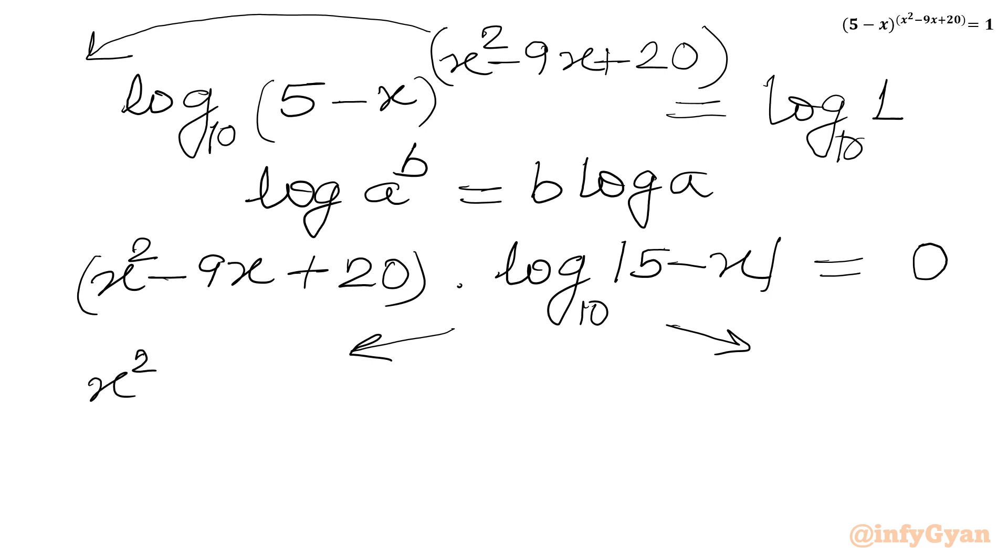I will write x square minus 9x plus 20 equal to 0, and second equation would be log of mod 5 minus x equal to 0. If I will solve first quadratic equation, we have already solved it. So we will be having here x equal to 4, x equal to 5. This is our solution so far.